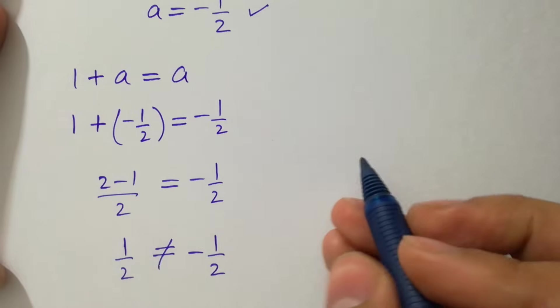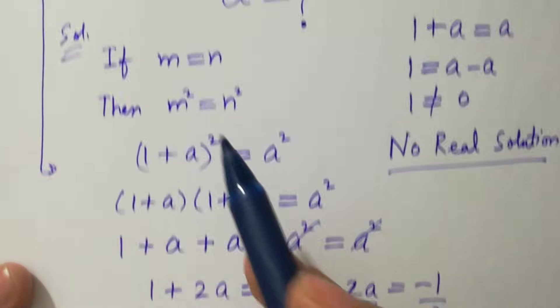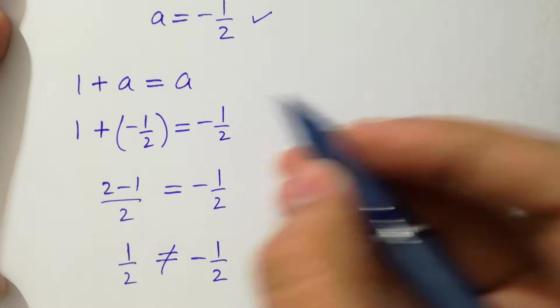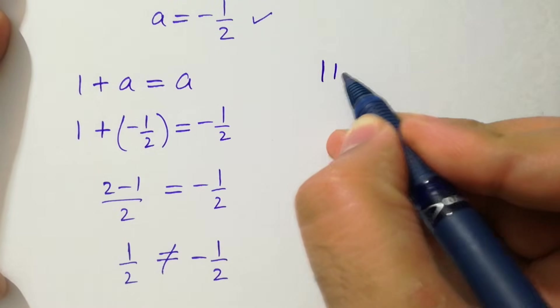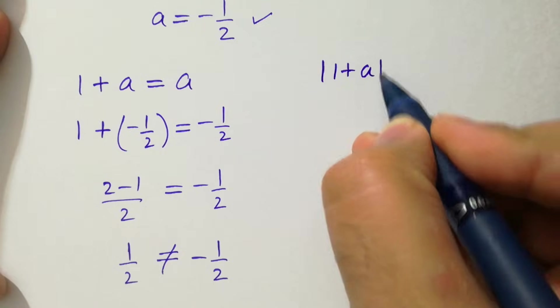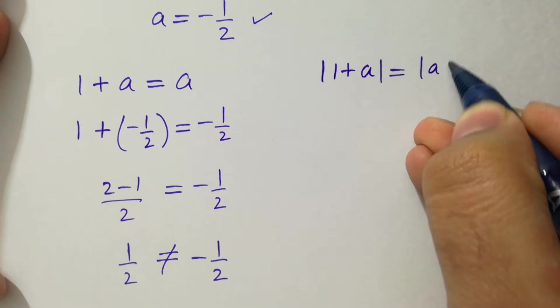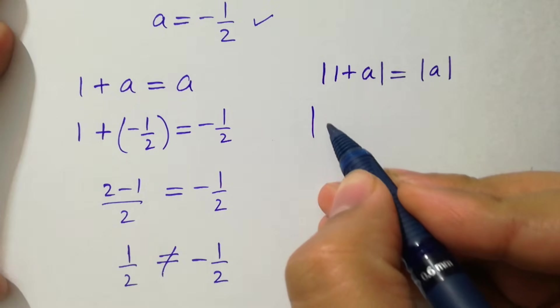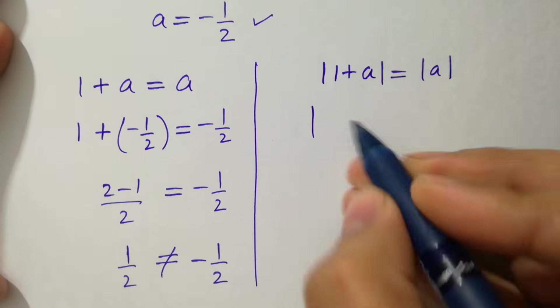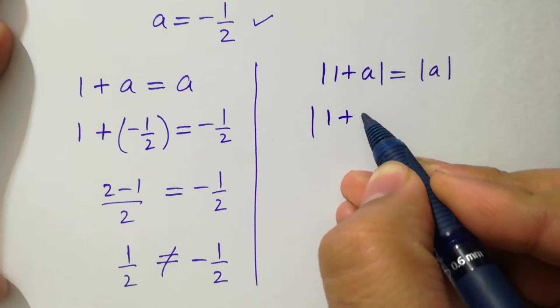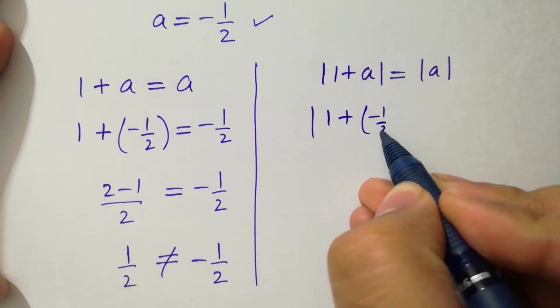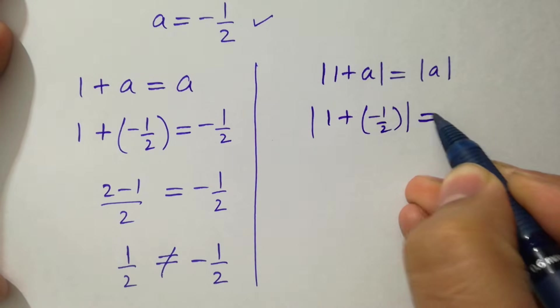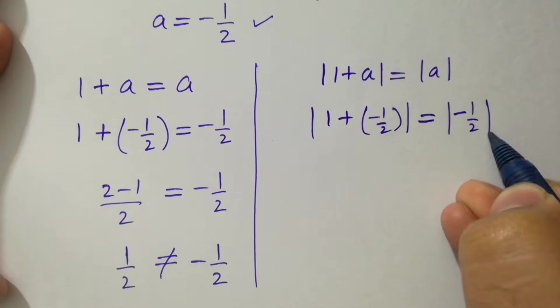If you take m = n, then m² = n². If you take modulus on both sides of this equation, |1 + a| = |a|, you can see here |1 + (-1/2)| = |-1/2|.